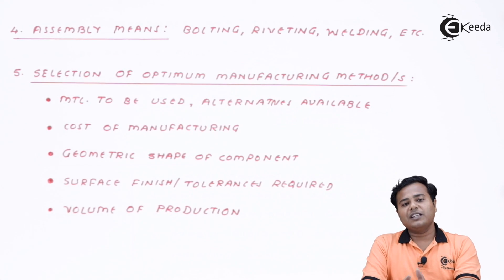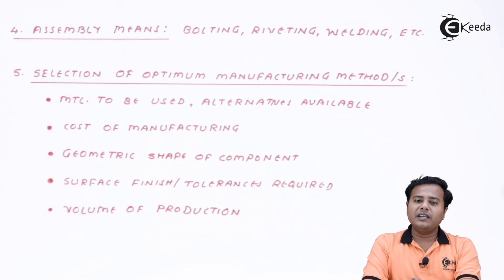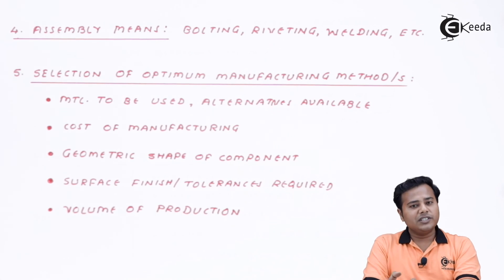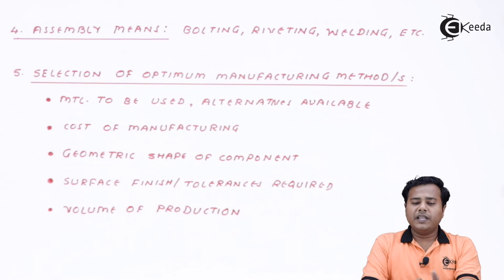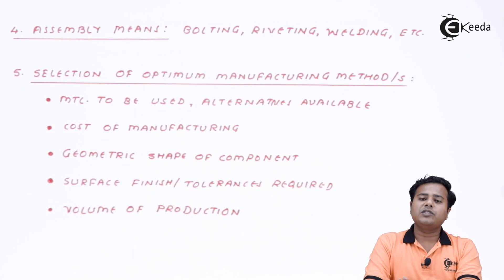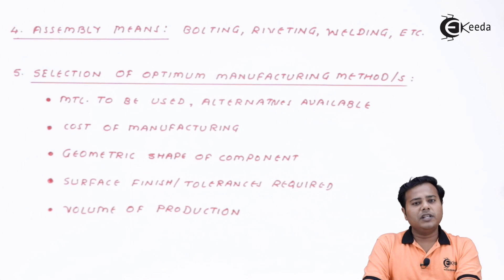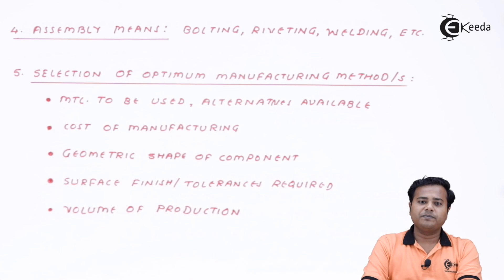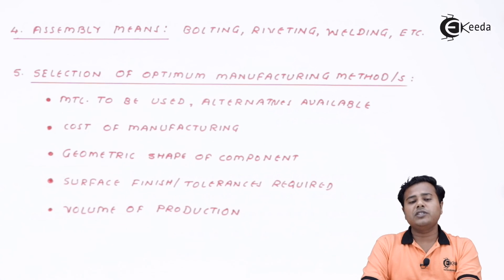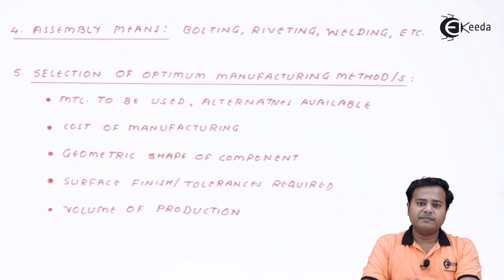These are some of the important aspects we need to take care of from the beginning of the machine design domain itself, so that the design will be accurate and economical as far as manufacturing procedures are concerned — avoiding material wastage, saving money as well as time. In the next session we will look at casting procedures and how their designs are affected by different simple tricks. Thank you so much for watching this video.